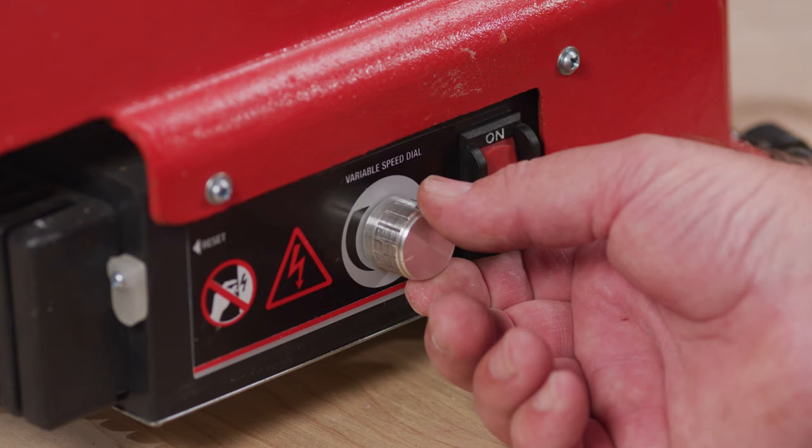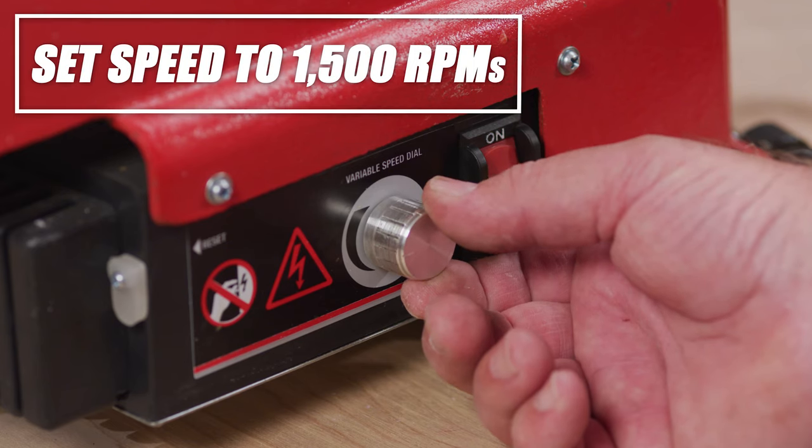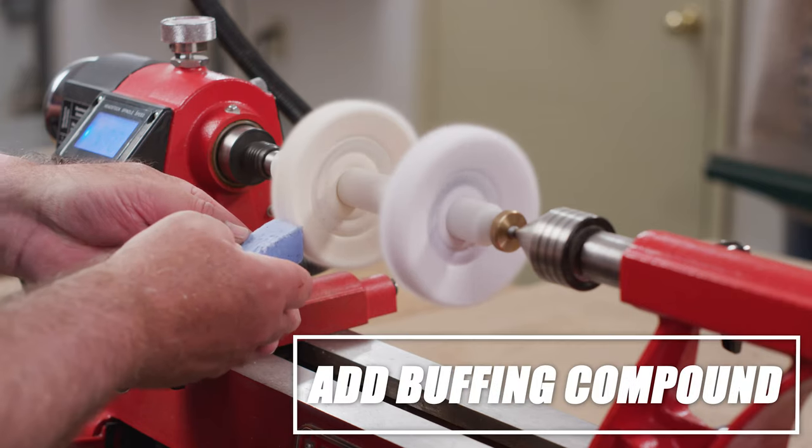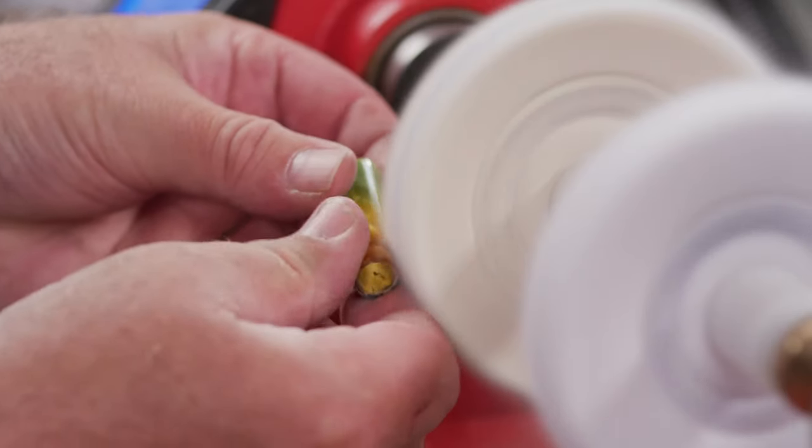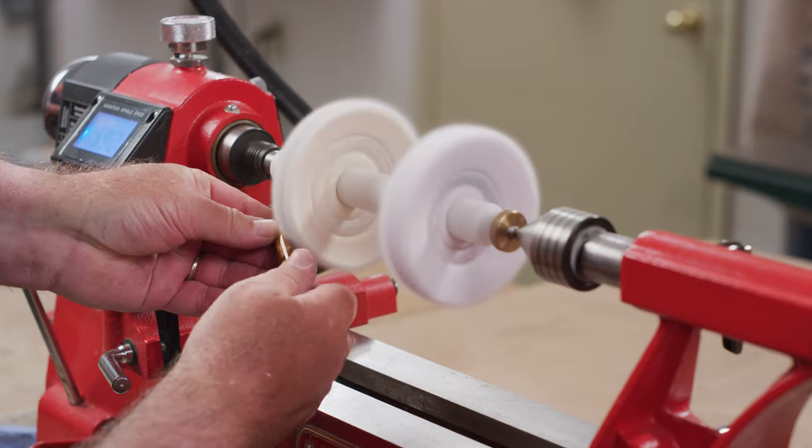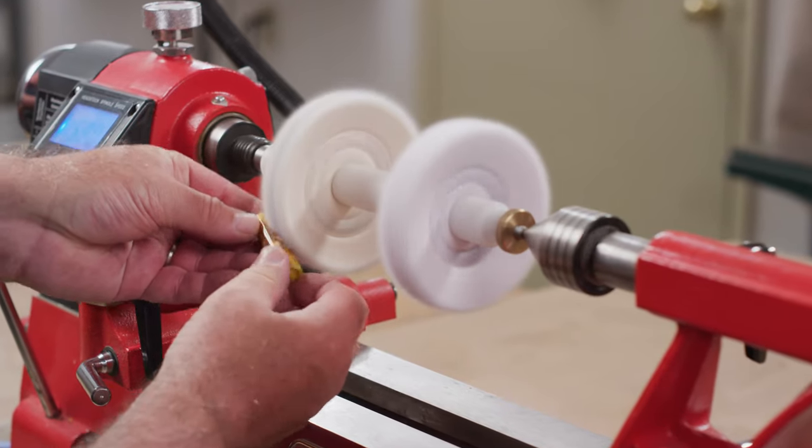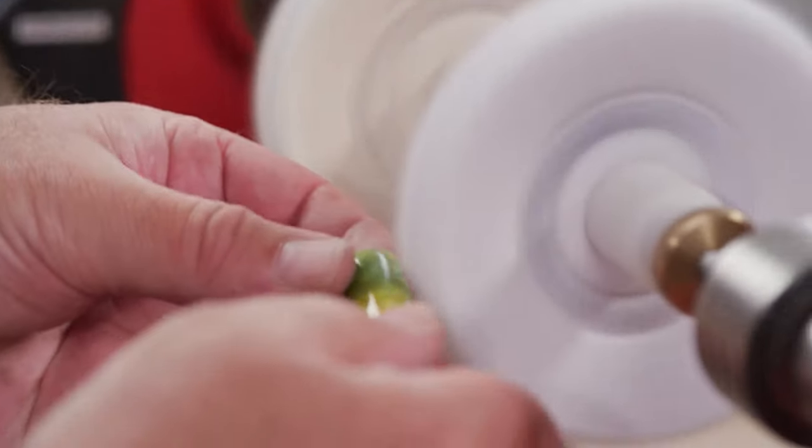With the lathe running at about 1500 RPM, apply the buffing compound to the cotton wheel. Keeping a firm grip on the pen blank, polish the finished barrel with the cotton wheel and buff it smooth with the flannel wheel.